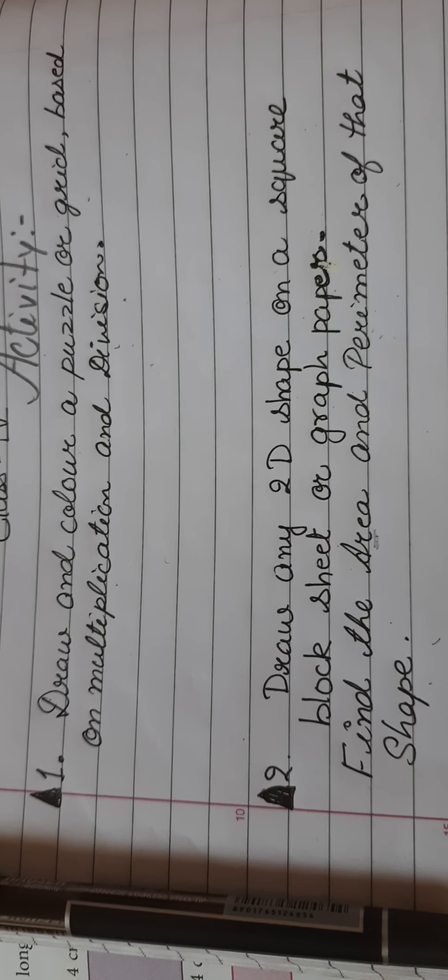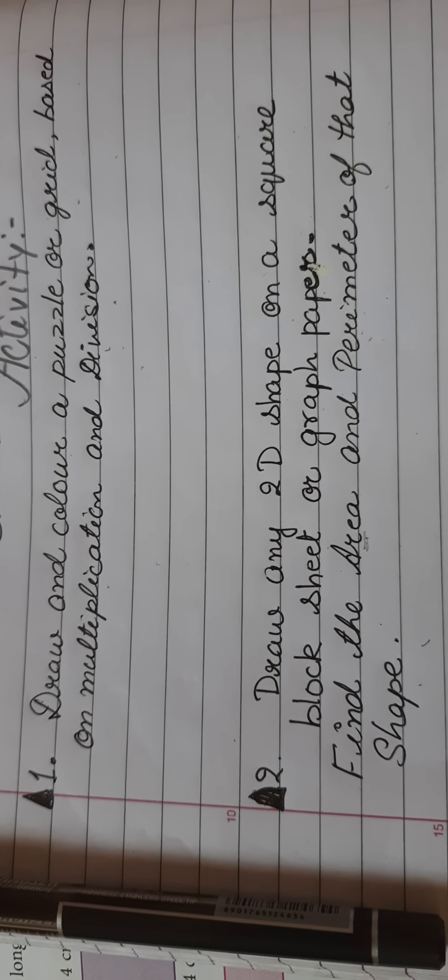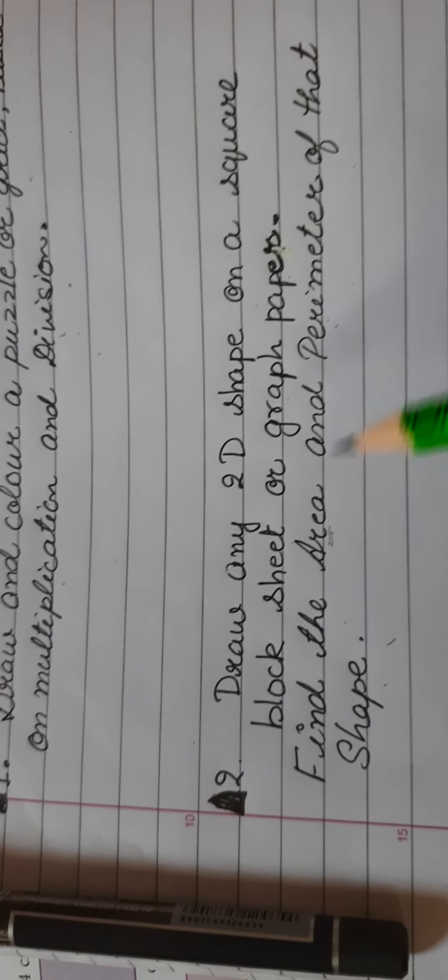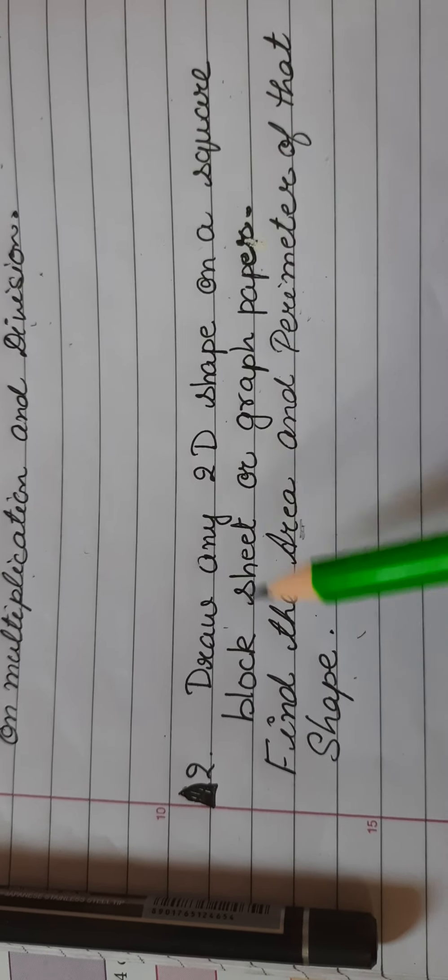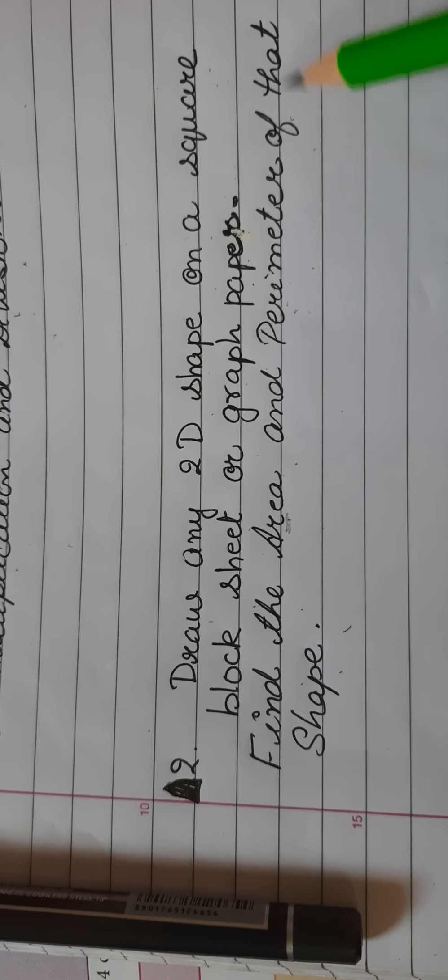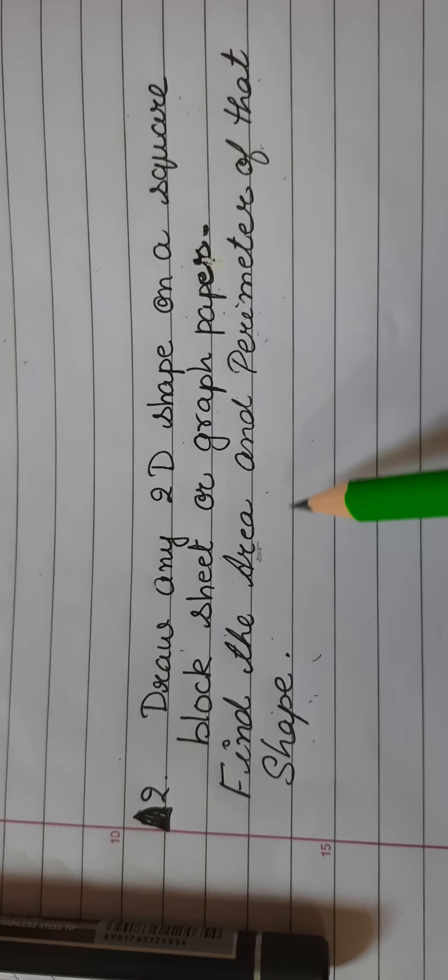Now in the next activity, which is draw any 2D shape on a square block sheet or graph paper, then find the area and perimeter of that shape.